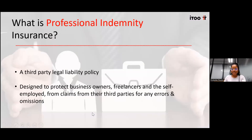So what is professional indemnity insurance? It's a third party legal liability policy, meaning that the policy is triggered once a third party has suffered some sort of damages, whether financial or the advice has caused them some harm. That is why it's called a third party legal liability policy. It's designed or tailored for business owners, freelancers and anyone who's self-employed from any claims arising from third parties for any errors and omissions.